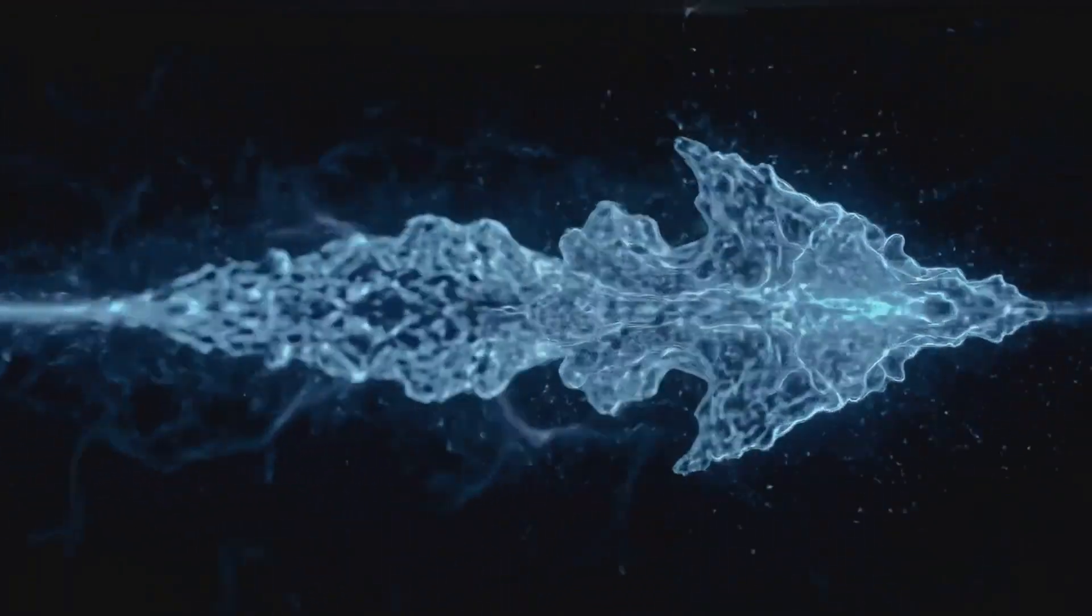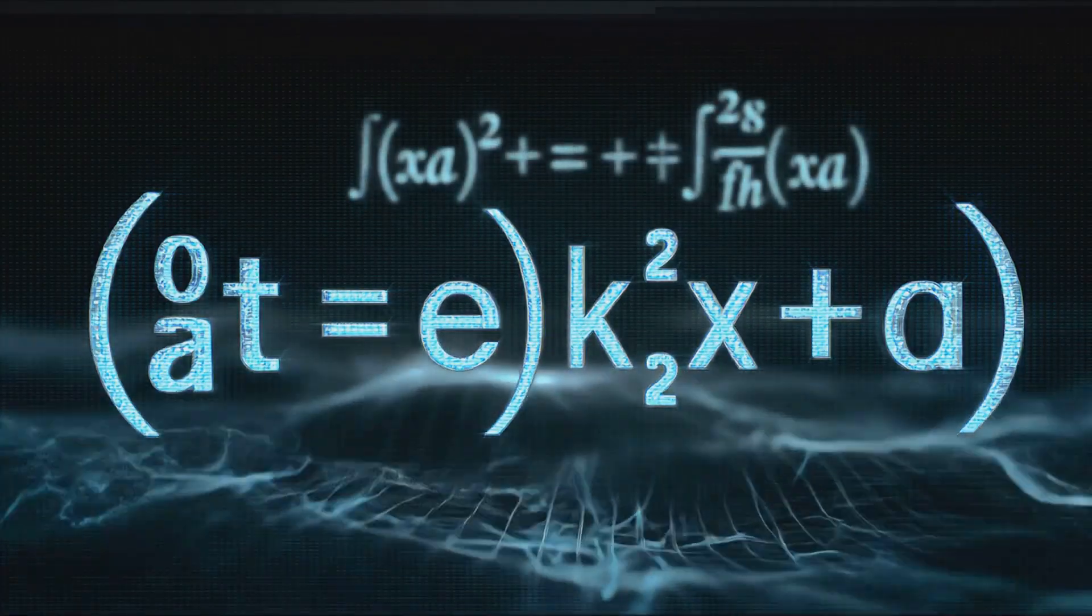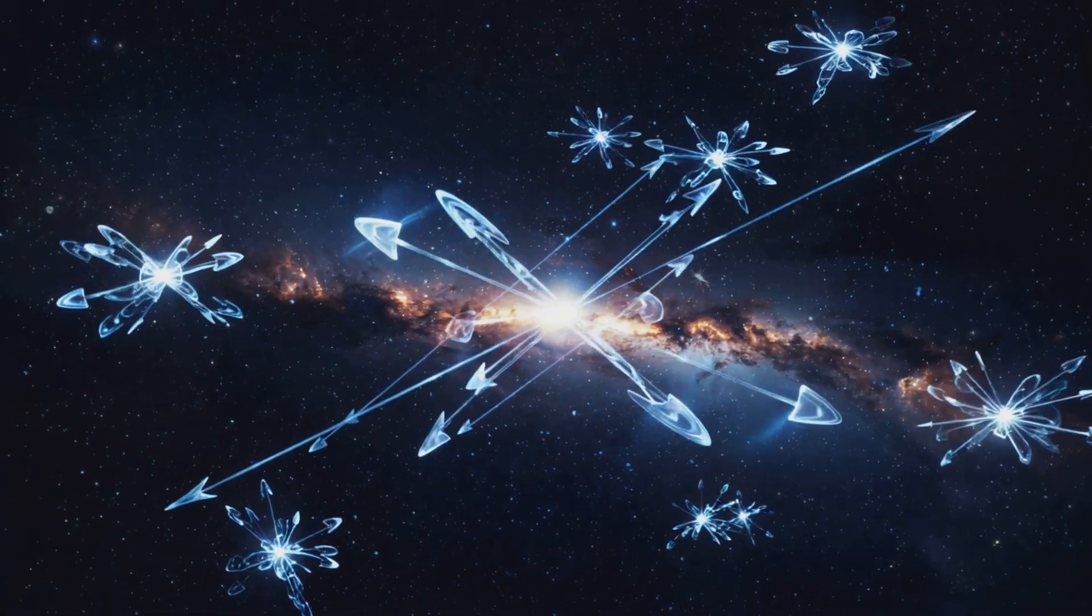This is how I describe each quantum note, a spinning vector of light where A is brightness, K is direction, omega is how fast it spins, and phi is the angle it starts from.